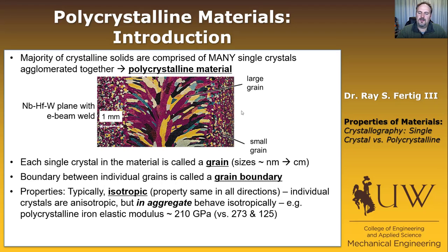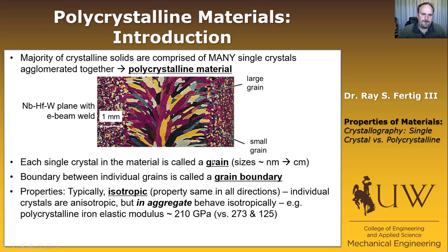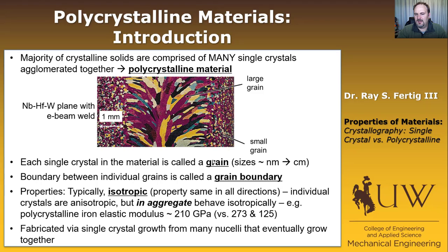Going back to our iron example: one direction along the diagonal gave a modulus of 273 GPa, and the 100 direction gave 125 GPa. But if you measure the modulus of polycrystalline iron — which is what your iron bar would be — you get a modulus of about 210 GPa. In terms of fabrication, polycrystalline materials form from multiple nuclei; as they grow together, they form grain boundaries at their interfaces.